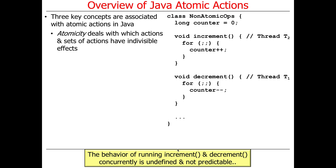Atomicity deals with which actions and sets of actions have indivisible or atomic effects. Here's a simple example to illustrate — this is intentionally buggy. We have a class called NonAtomicOps with a counter that's a long, and two methods: increment and decrement. Increment counts upward forever, decrement counts downward forever. We run increment in thread T2 and decrement in thread T1. The question is: what will the result be? And the answer is, who knows.